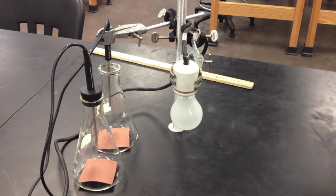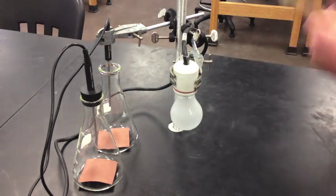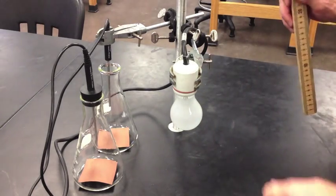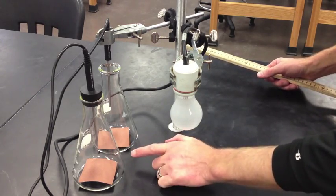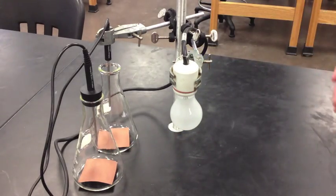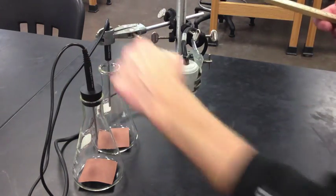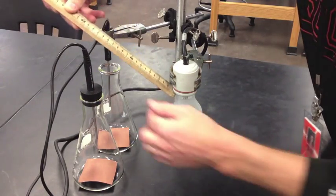A couple things to check before we get started. One is that the light bulb is about 10 centimeters from the table. That seems to work pretty well. You'll want to make sure that the paper is in both of the flasks. And distance makes a huge deal. You have to make sure that the distance that these temperature probes are, and that the flasks are away from the bulb, is identical. So find a way to check that.